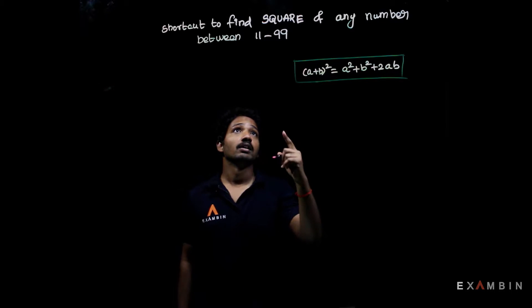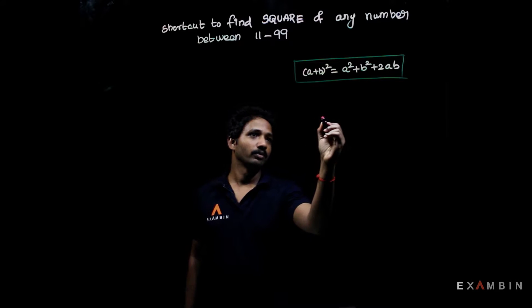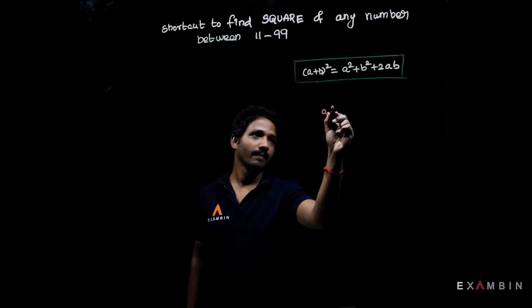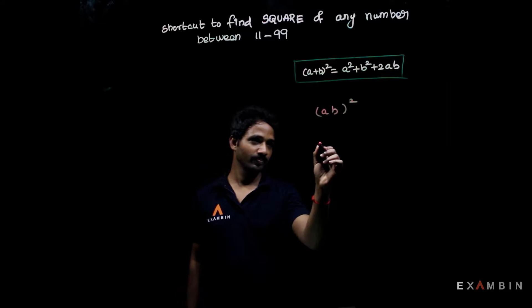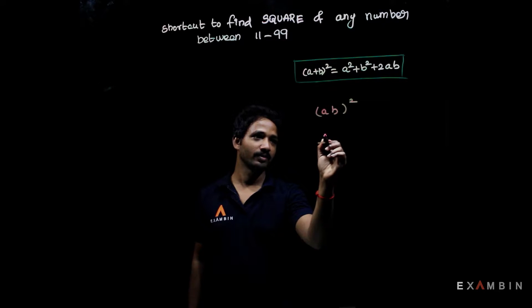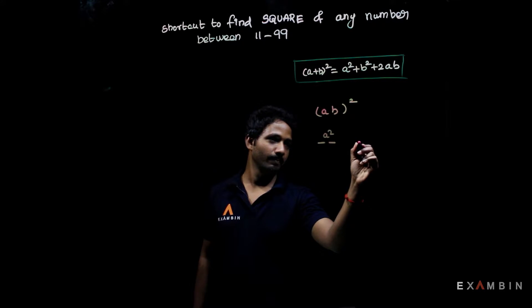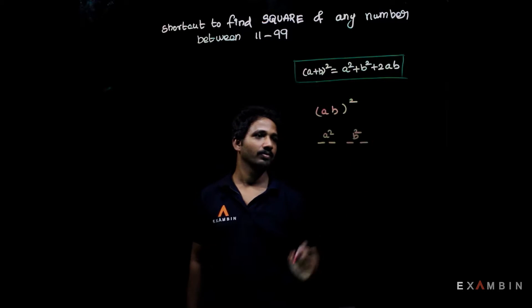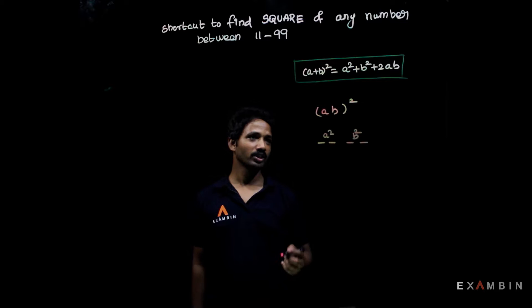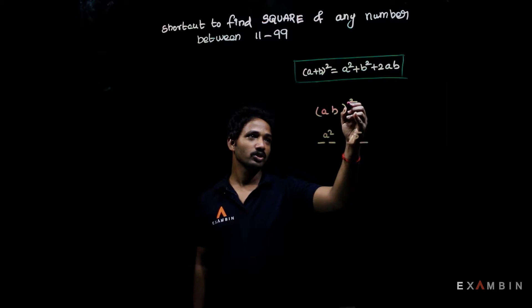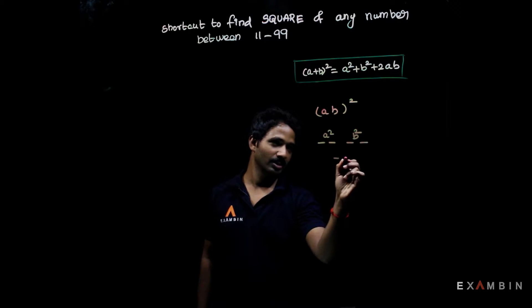For calculating square value of any number (ab)², what you have to do is you need to write a² value here. Please note that you need to write it as a 2-digit number and b² value here. Then what you need to do is you need to write 2ab value here.